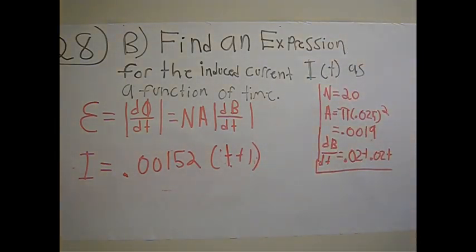So the current as a function of time is 0.00152 times (t plus 1) amps.